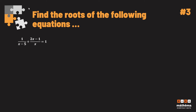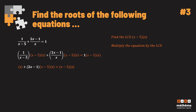Now let's look at rational equations. We have 1/(x − 5) + (2x − 1)/x = 1. To find the roots, first find the LCD. In this example the LCD is (x − 5) · x. Next, multiply the entire equation by the LCD. The (x − 5) in the first term cancels, leaving x. The x in the second term cancels, leaving (2x − 1)(x − 5).